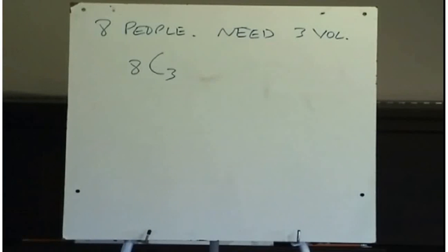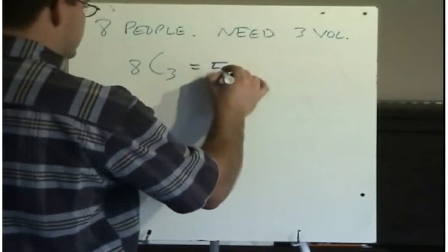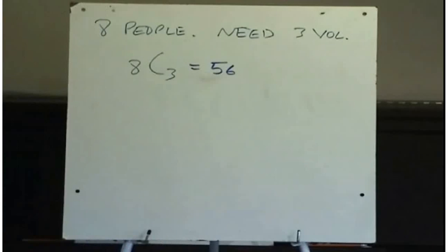We would denote this instead of 8P3 as 8 Choose 3, or 8C3, for a combination. And you have this button in your calculator. It's the same place where you found the permutation button. And so when I work this out, I get 8C3 as being 56. Okay, so there's 56 ways of choosing three people out of eight.